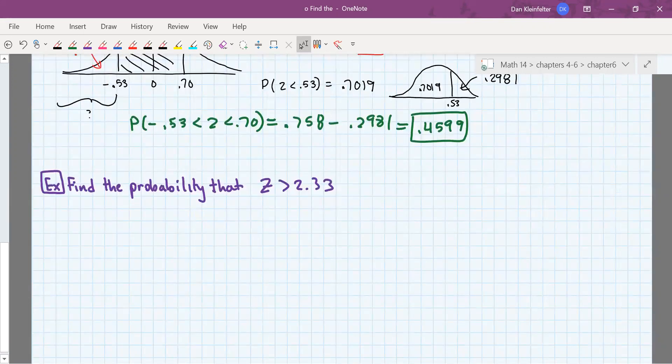All right, now we want the probability that z will be greater than 2.33. So this time we want a right tail. We need greater than 2.33.